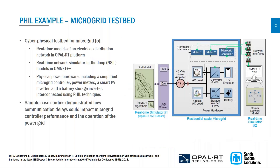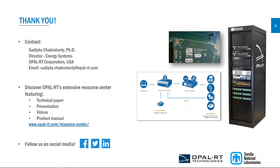The last example is a microgrid cyber-physical testbed including a real-time model of the electrical system on the Opal-RT platform, a real-time network simulator in Omnet++, and physical hardware including a simplified microgrid controller, power meters, a smart PV inverter, and a battery storage inverter interconnected using PHIL techniques. This work examined how communication latencies, delays, and network events impact microgrid operation and, when microgrids are connected to the grid, how those latencies affect broader power grid operation. With that, I will end my presentation — thank you for joining, and you will now see some poll questions before hearing from the next presenter.